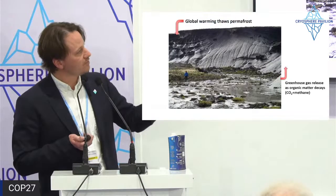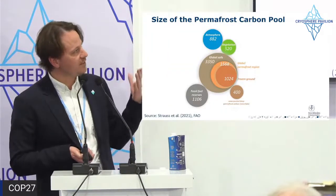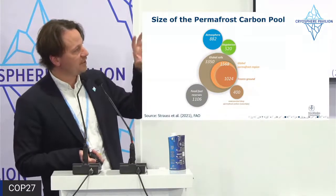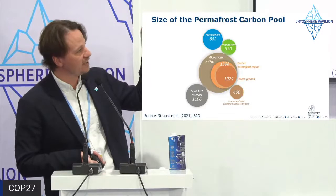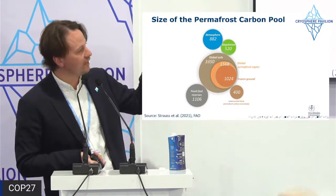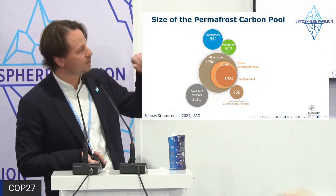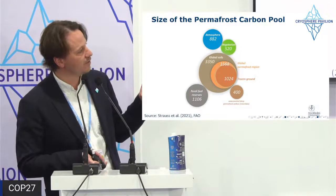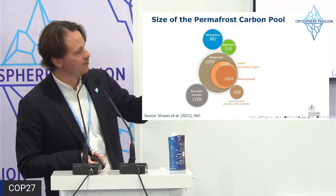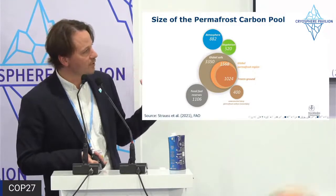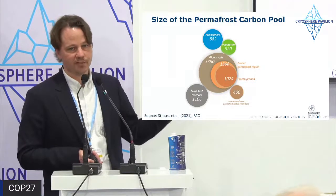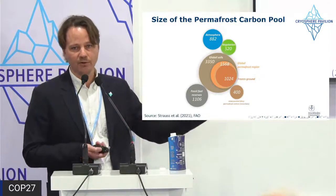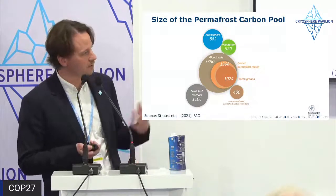The scale of this problem relates to the magnitude of the carbon pool stored in permafrost. In this proportionally-sized bubble graph: the atmosphere holds close to 900 gigatons of carbon. Permafrost is part of the global soil carbon pool — the largest responsive carbon pool in the Earth system — and permafrost is roughly half of that, estimated at almost 1,600 gigatons of carbon, with additional unaccounted deposits in very deep permafrost.